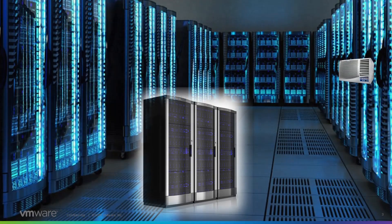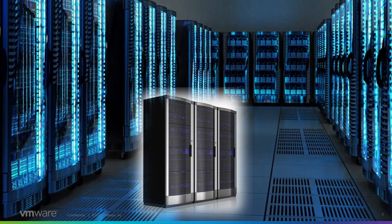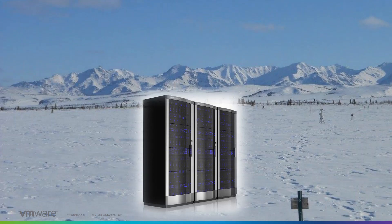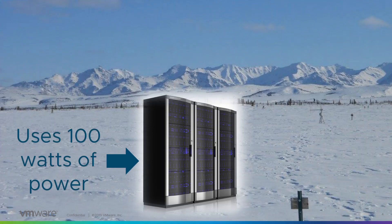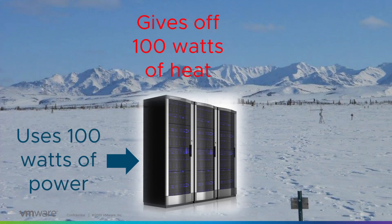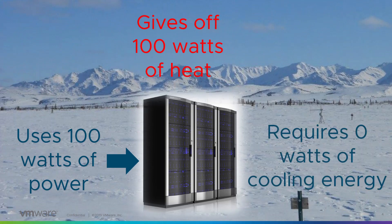Now let's look at moving our data center to Siberia. In Siberia, we're not going to need any cooling, so let's get rid of that. To make the example a little more clear, let's get rid of the whole data center entirely and just put our server out in a snowbank. Our server is still going to require 100 watts of power to operate and will still generate 100 watts of heat. However, because we're using the planet to cool the server, we don't require any additional watts of cooling energy, nor do we require any energy for the lighting.